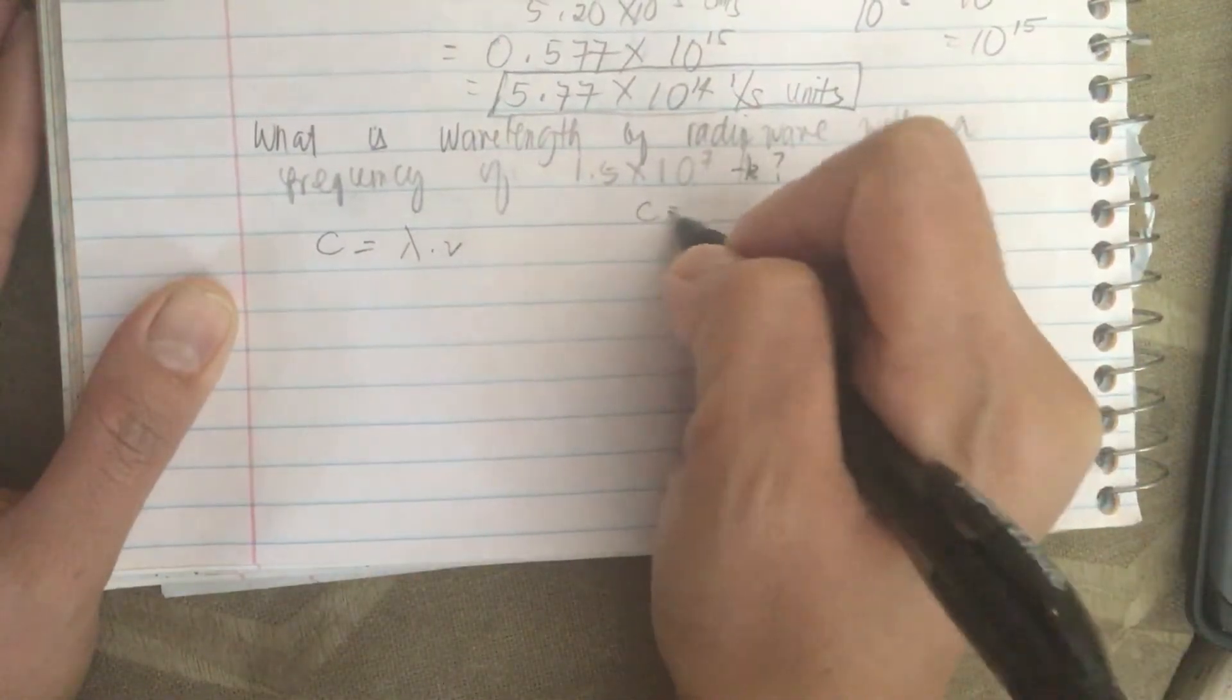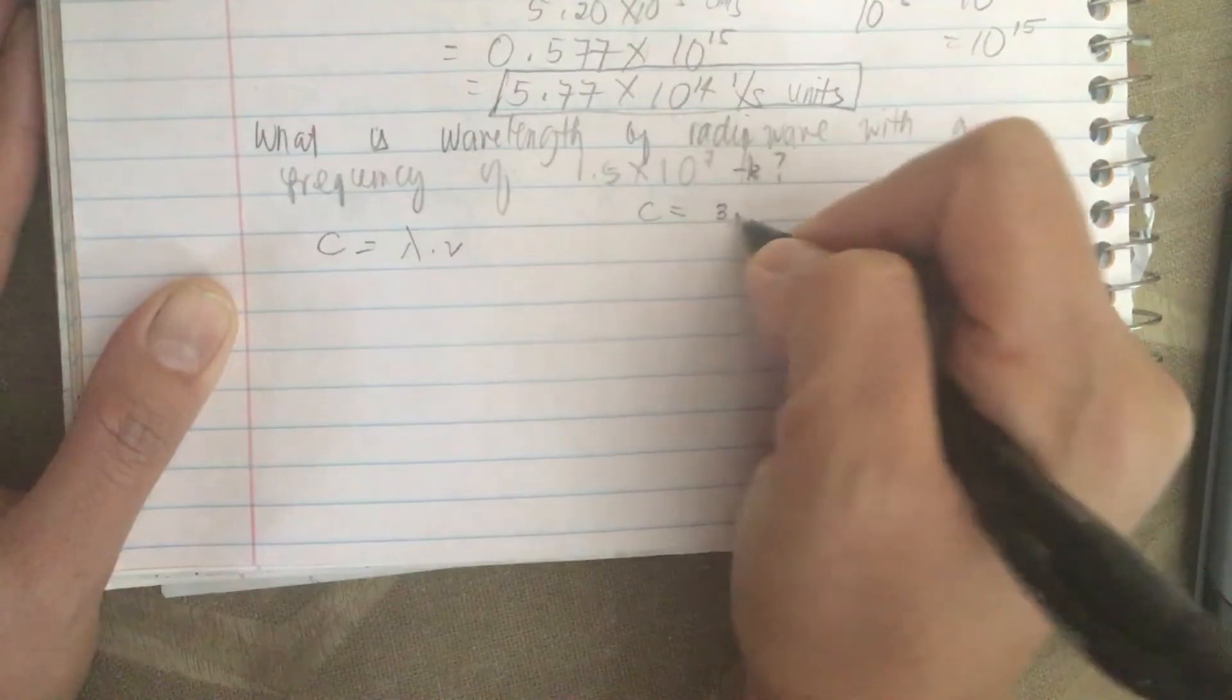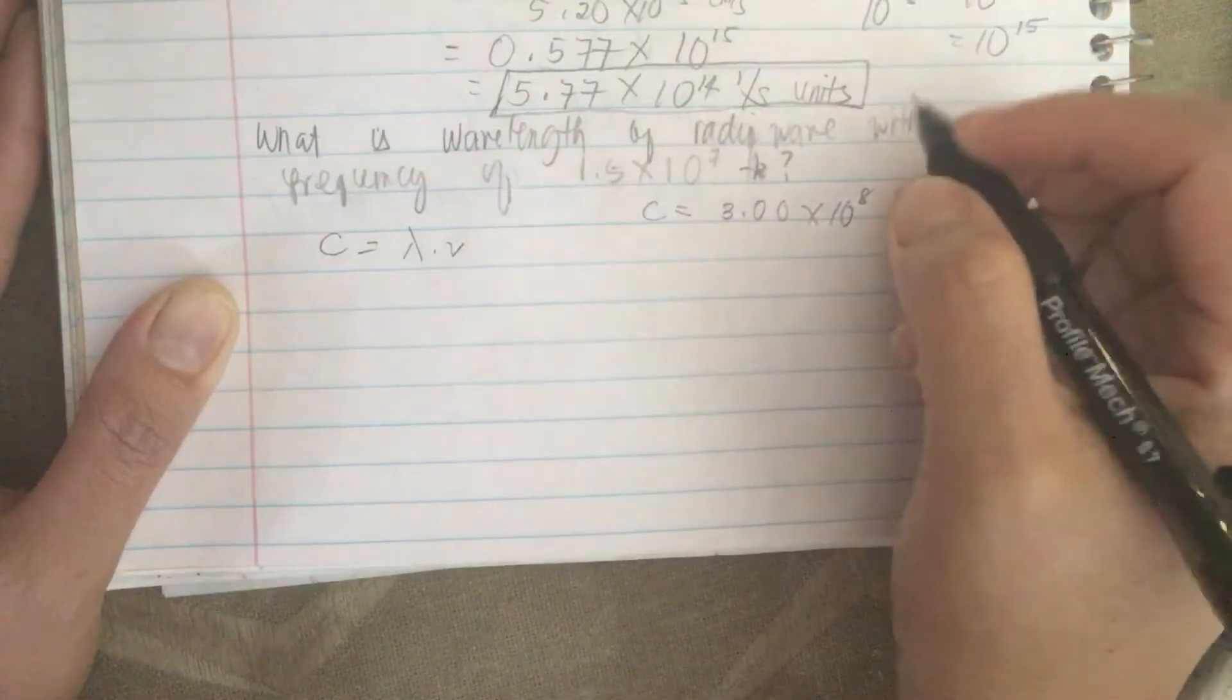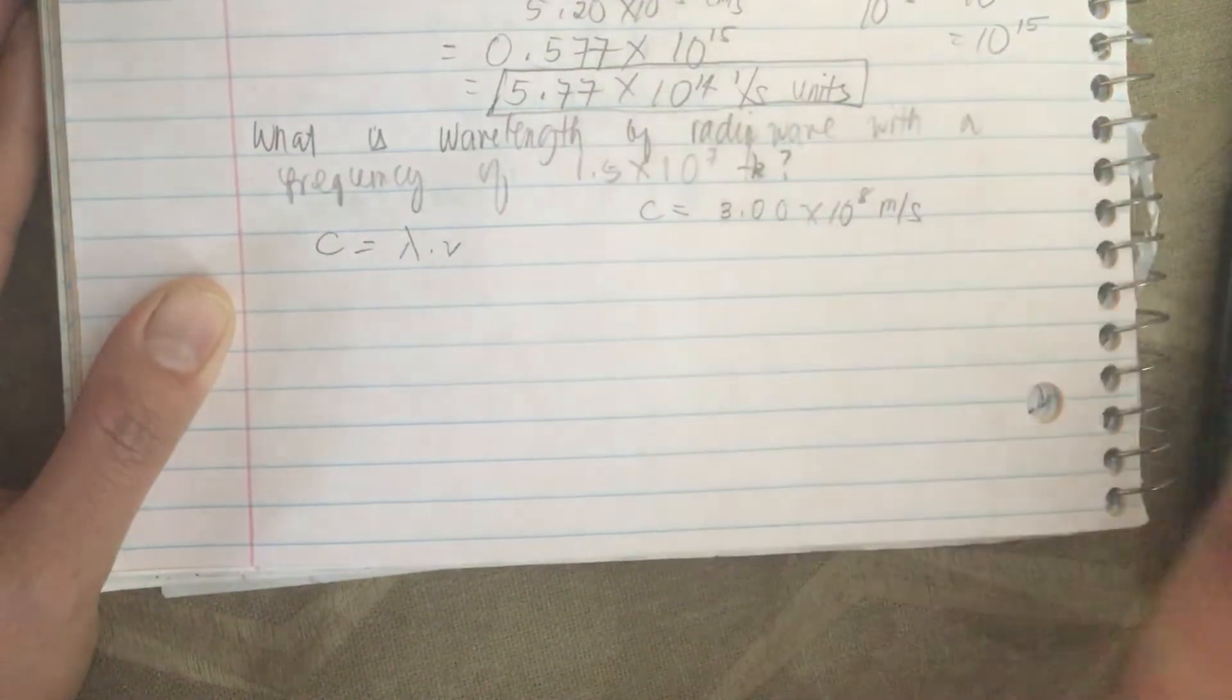C is equal to 3.00 times 10 to the 8 meters per second.